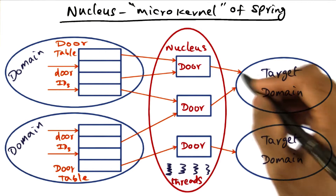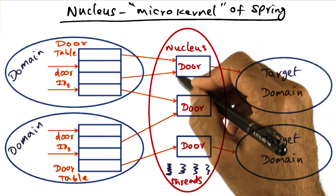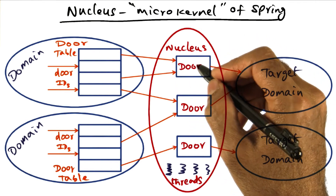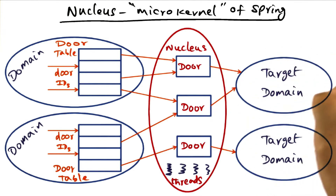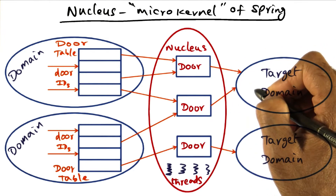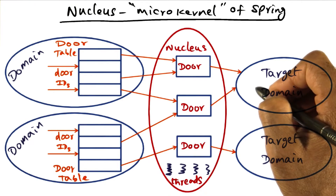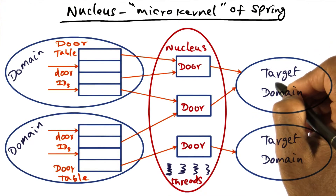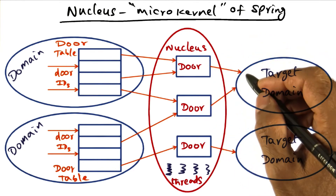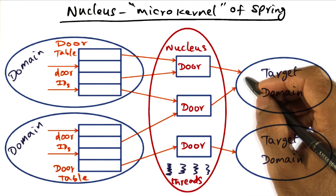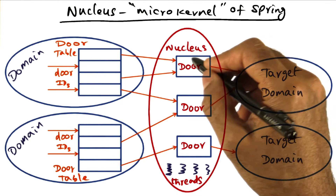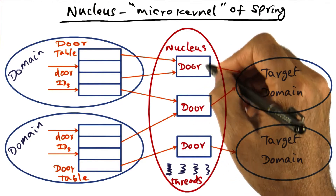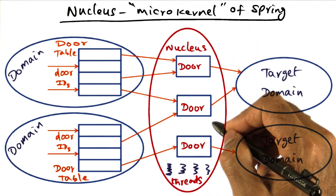Any domain can create these Nucleus entities called doors, which are essentially entry points for entering the target domain. With object orientation, the only thing you can do is make invocations on objects, and the entry points available in the objects contained in a domain are represented by this abstraction called door, provided by Nucleus.